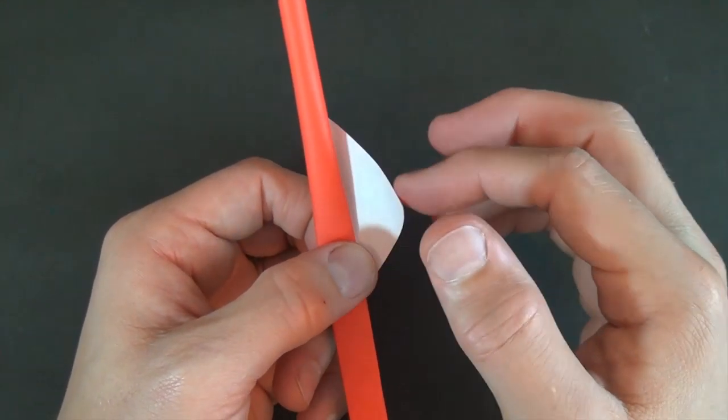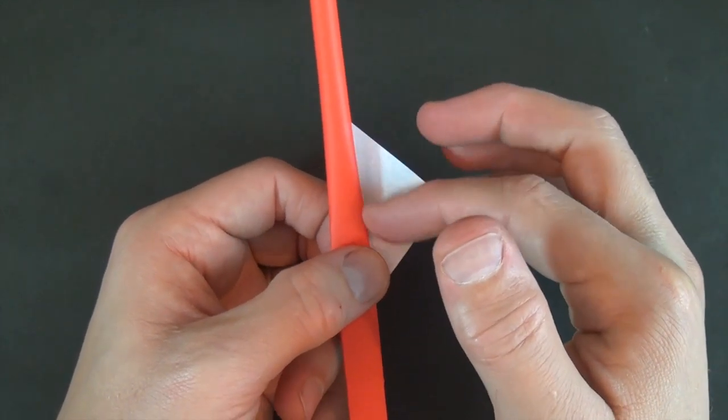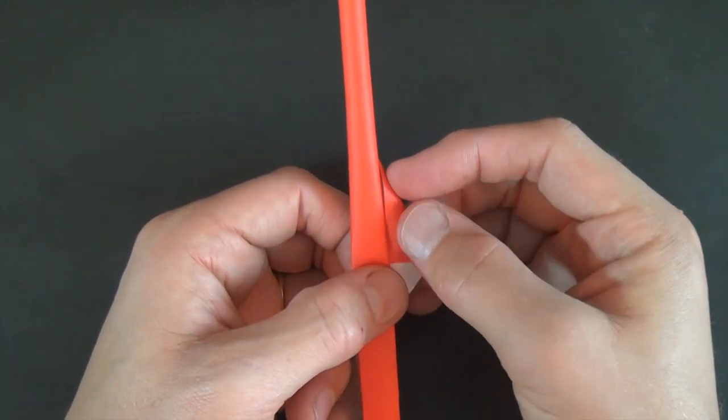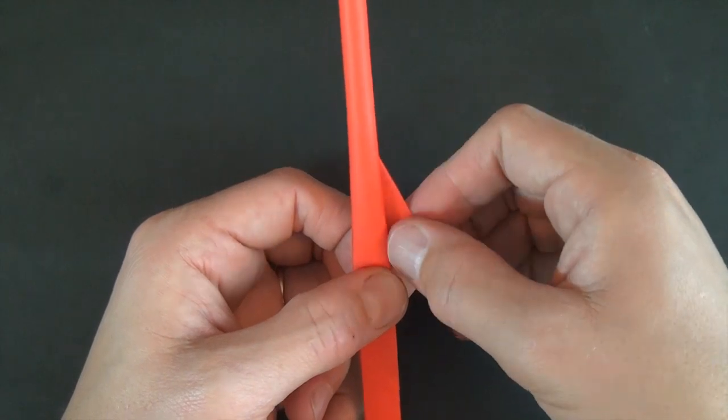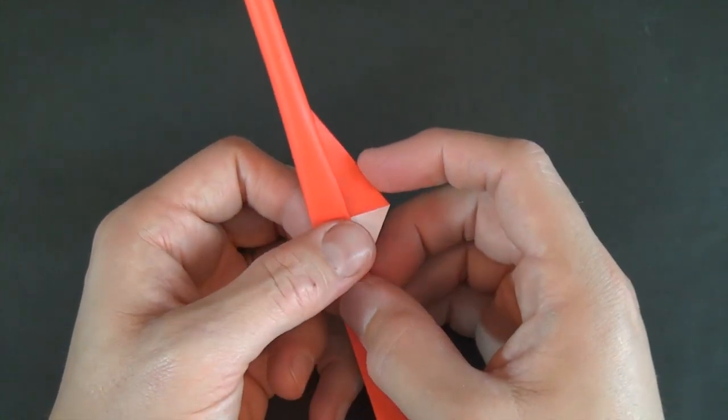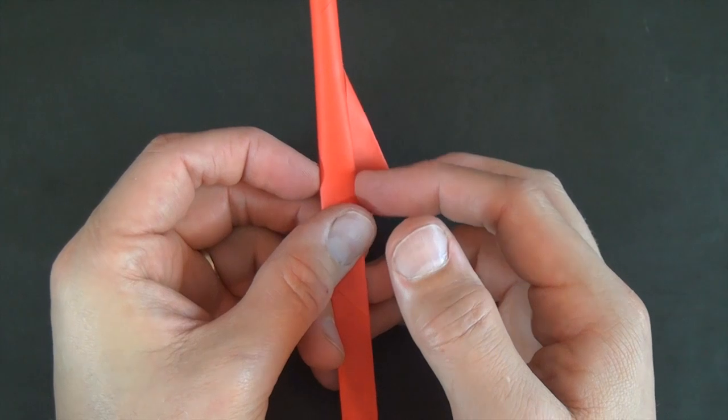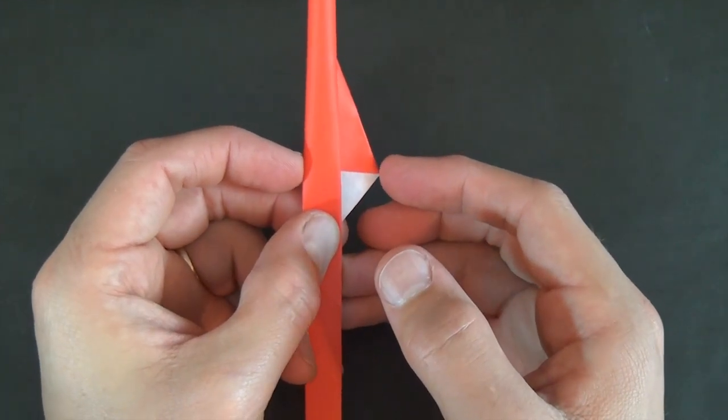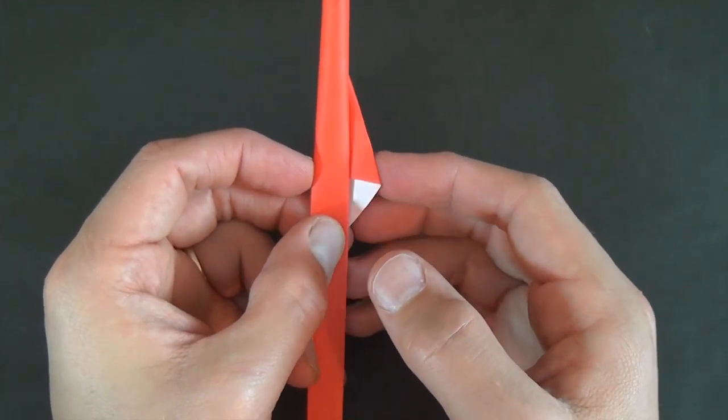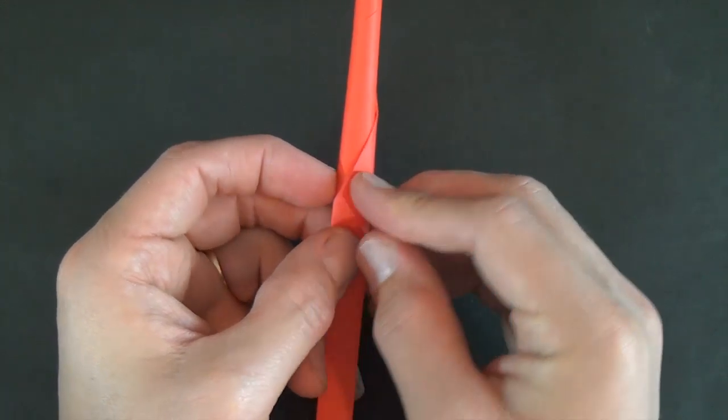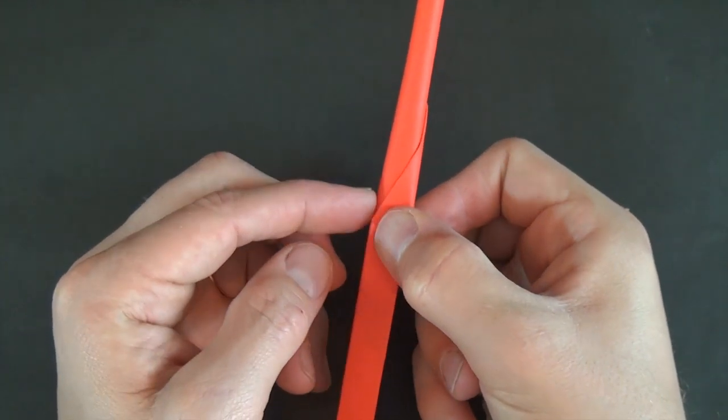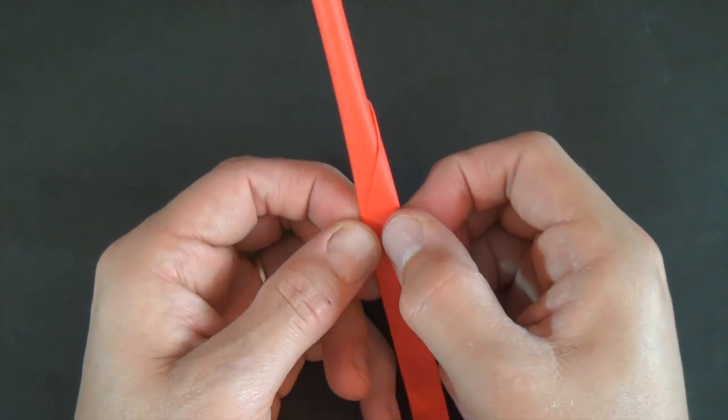And now we're going to take this edge and fold it right to this edge but go underneath. And what you want is you want this edge to be right in between your two fingers so that you fold this over and it comes right to the side like that.